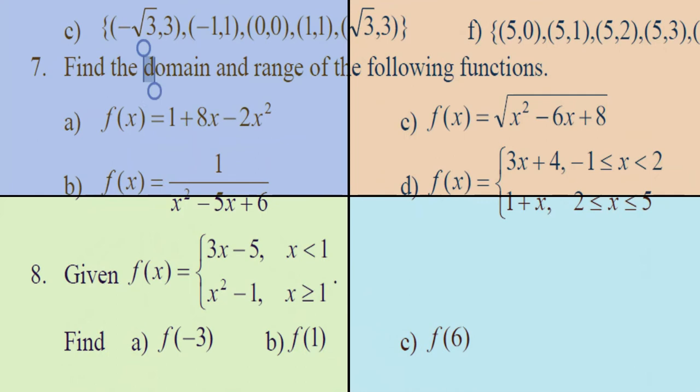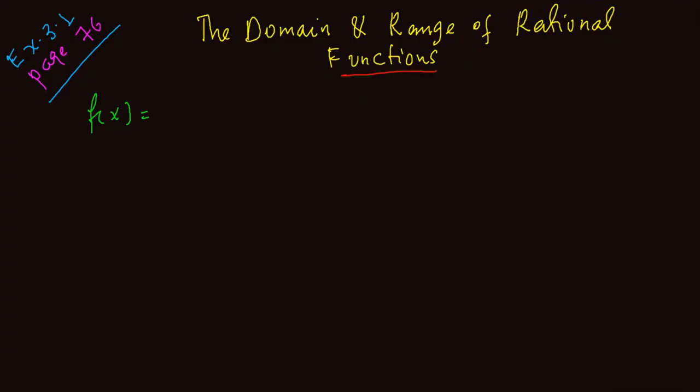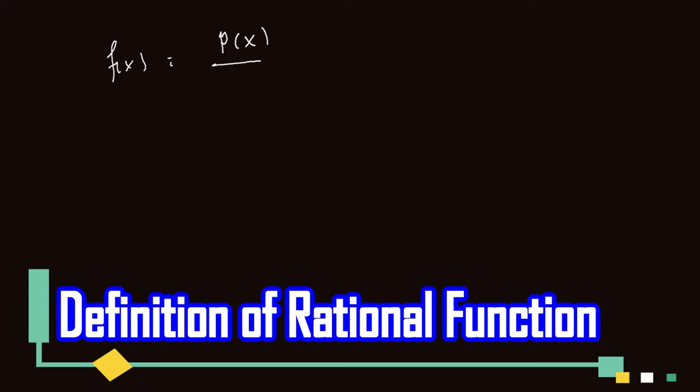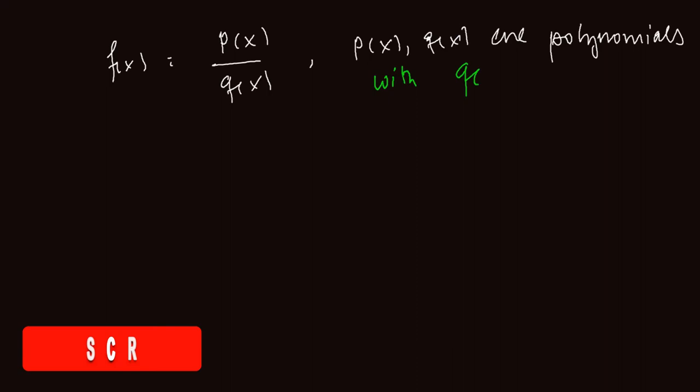Let's find the domain and range of these functions. Part 3: the given rational function is 1 over x squared minus 5x plus 6. We have to find its domain and its range. A rational function f of x is p of x divided by q of x, where p of x and q of x are polynomials and q of x is different from 0. This is the definition for a rational function.